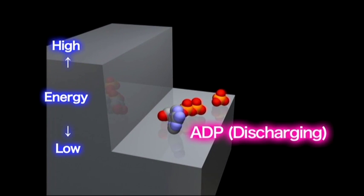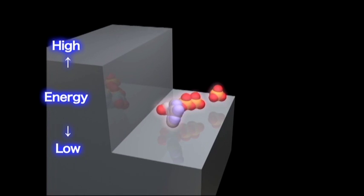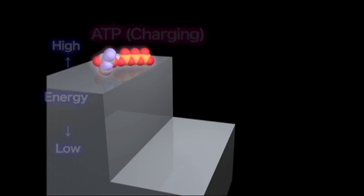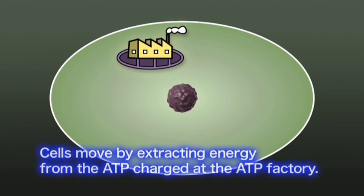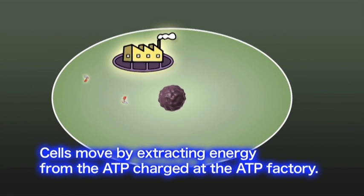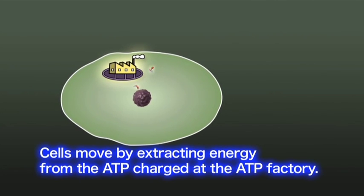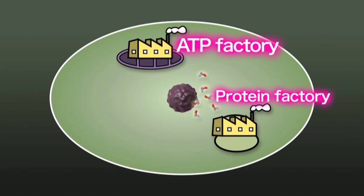ADP, the discharged molecule, becomes ATP, a charged molecule again, by using the energy of food or photosynthesis. The mitochondria in cells contain a factory powered by food or photosynthesis that generates ATP molecules by extracting energy. From the ATP produced at the factory, cells carry out activities of life such as movement, growth, and protein production.